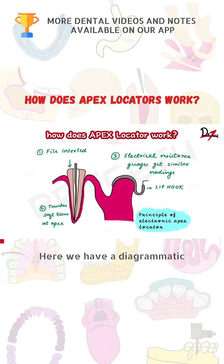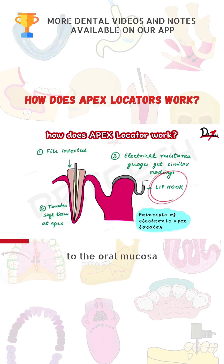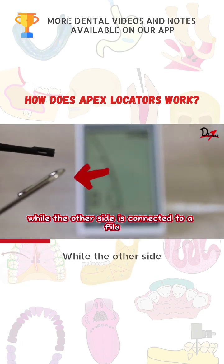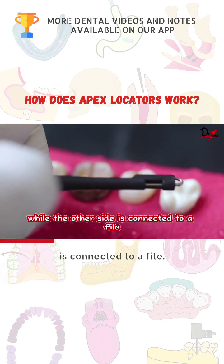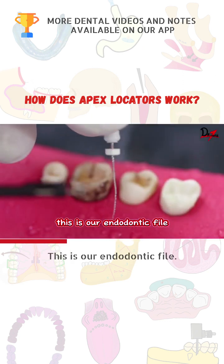Here we have a diagrammatic representation of the apex locator. One part of the apex locator circuit is connected to the oral mucosa through a lip clip — here is our lip clip — while the other side is connected to a file. This is our endodontic file.